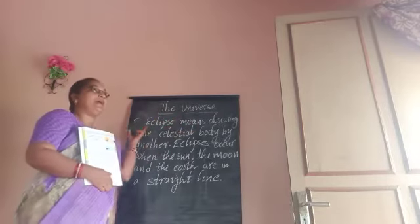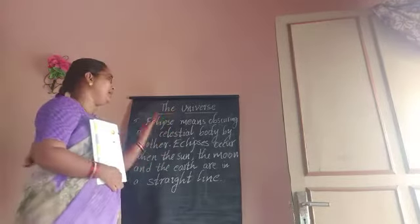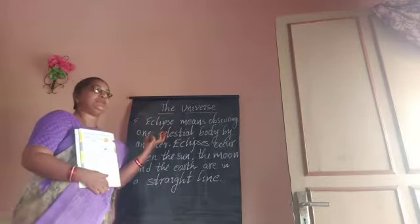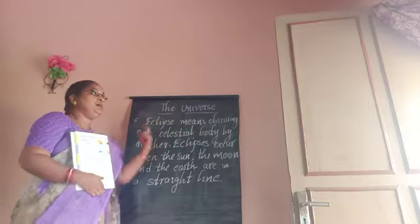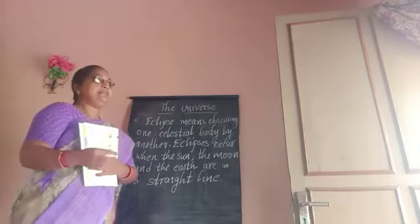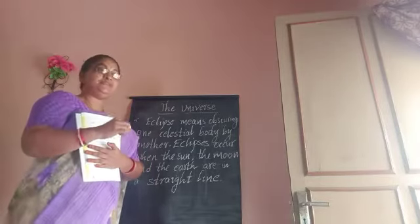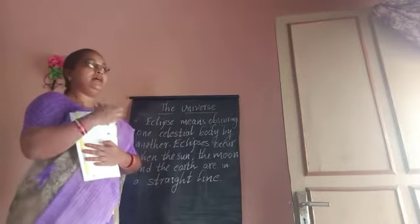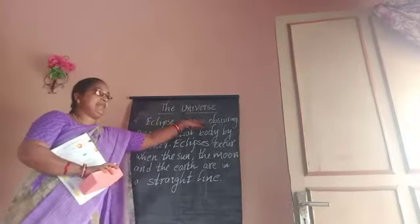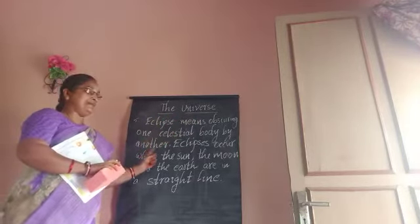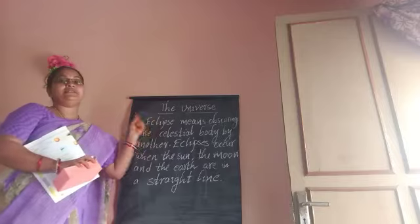Eclipse means obscuring one celestial body by another. Eclipses occur when the sun, the moon, and the earth are in a straight line.